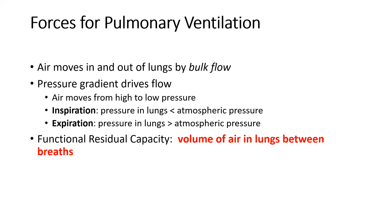Air moves in and out of the lungs by bulk flow — the pressure gradient being the driving force. Air moves from high to low pressure, so we create a gradient that facilitates airflow in the direction we want. If we want air into the lungs, atmospheric pressure must be greater than pressure inside, creating that high-to-low gradient. If we want air out, alveolar pressure must be higher than atmospheric, driving flow out.